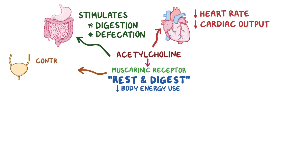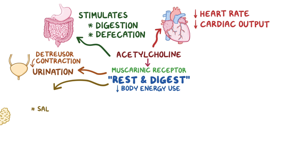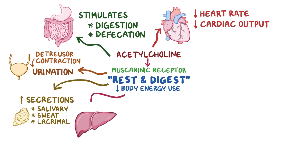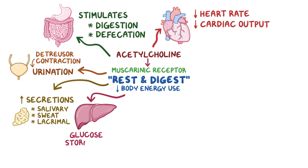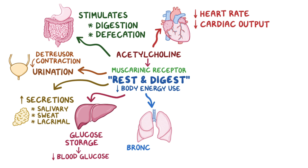In the bladder, it causes constriction of the bladder muscle — called the detrusor muscle — which stimulates urination. In the salivary, sweat, and lacrimal glands, it increases their secretions. In the liver, it triggers glucose storage to reduce blood glucose levels. In the lungs, it causes bronchoconstriction, since in a relaxed state our cells do not consume as much oxygen.